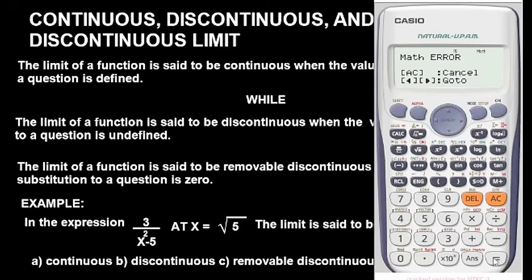Had we done this and got a definite value like two, three, 5.2, 6.7, or whatever the case may be, this should have been a continuous limit. Had we done it and got zero, just zero, no point zero, just zero, this should have been a removable discontinuous limit.